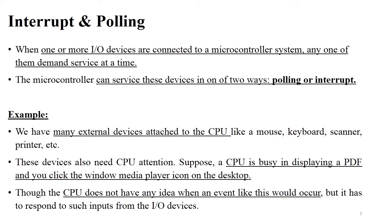There is only one microcontroller and many devices connected to it. The microcontroller must give services to each device. It uses two ways for this: polling and interrupt. Suppose a processor has different devices like printer, scanner, keyboard, and mouse connected to it. The processor gives processing power to each device as required. When you press a key on the keyboard, the keyboard requires processing power; when you give a print command, the printer requires processing power. So the microcontroller serves all devices using polling or interrupt.